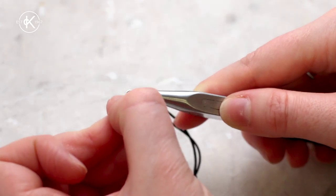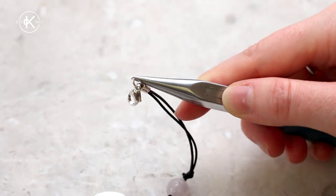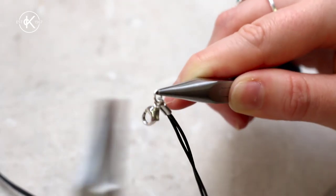Repeat this on the other side, but this time don't forget to hook on the clasp before twisting your jump ring closed. Fasten the bracelet and your design is complete.